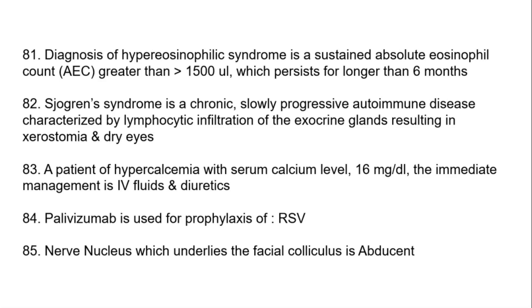Diagnosis of hypereosinophilic syndrome is a sustained absolute eosinophil count greater than 1500/microliter which persists for longer than six months. Sjögren's syndrome is a chronic slowly progressive autoimmune disease characterized by lymphocytic infiltration of the exocrine glands resulting in xerostomia and dry eyes.